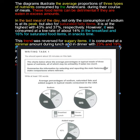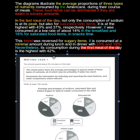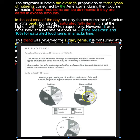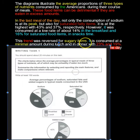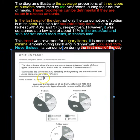That sentence is marked blue because it's incoherent — it doesn't make any sense at all. '14 percent in the breakfast' — we never put 'the' before breakfast. And here 'trend' is cropping in. Like 'peak,' trend requires change over time. This is not a trend — this is just an occurrence. 'This trend was reversed for sugary items' — what trend? And it's not 'sugary items,' just 'sugar.' 'It is consumed at a minimal amount during lunch and dinner with 23 and 19 percent' — dinner is the second most, the second highest number there. It is not minimal.